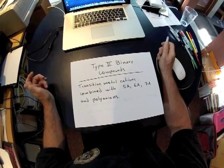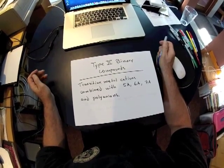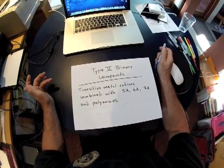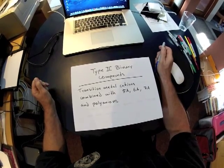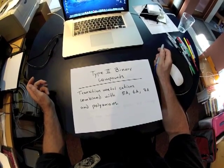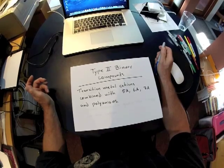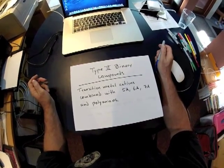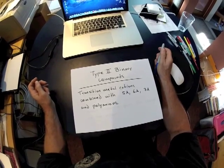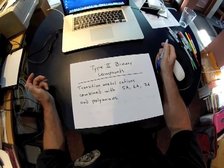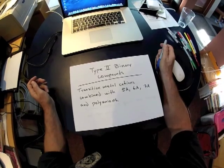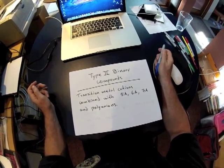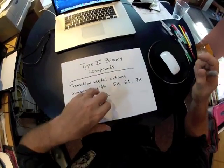This video is going to focus on Type 2 Binary Ionic Compounds. What are these compounds and what's the difference? With Type 2s, these involve transition metal cations that are being combined with 5A, 6A, 7A elemental ions, or a polyanion. The reason why a special naming system is needed for ionic compounds that contain a transition metal is because transition metal cations can have multiple possibilities as far as their charges are concerned.